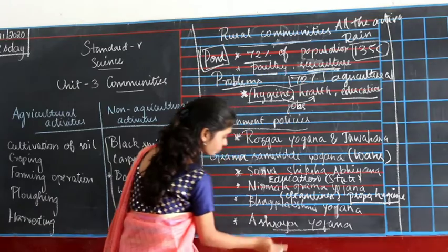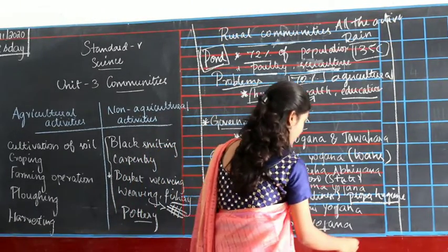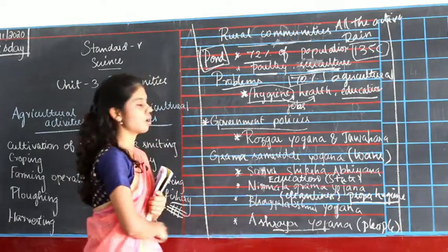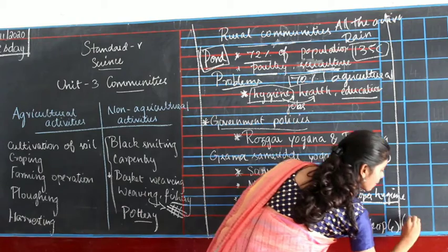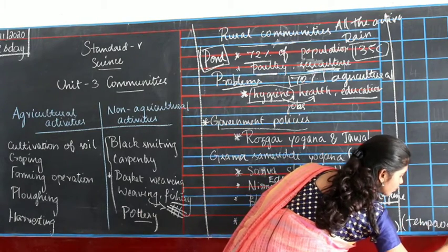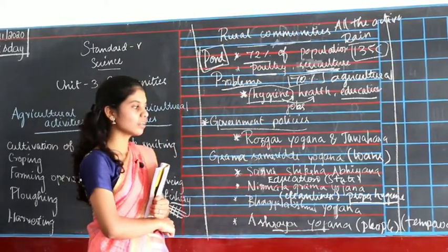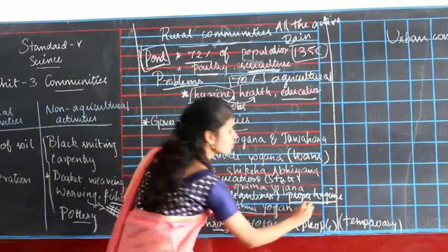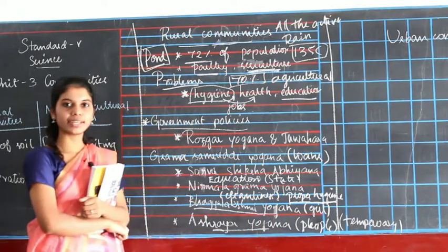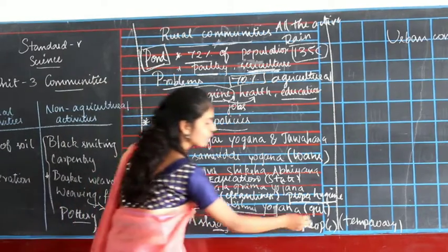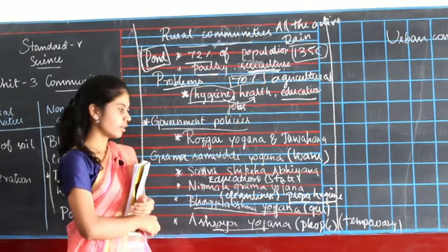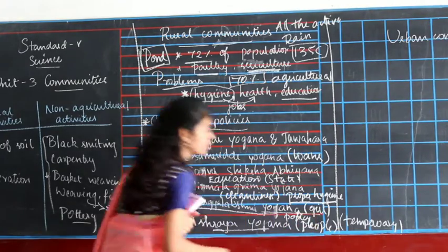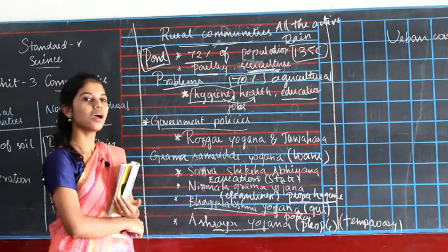Then Ashraya Yojana — this is for people who don't have homes. They provide temporary houses and free sites for poor people so that they will get some home to live. And then there is a policy for girl children, because people in rural communities may not have the knowledge of how to raise a girl child properly, so this policy helps to provide education to girl children and give them loans for their life.